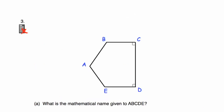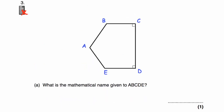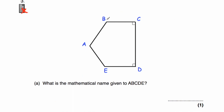Question number three: we've been given the shape ABCDE. Part A says, what is the mathematical name given to the shape ABCDE? It is a pentagon because it's got five straight sides — one, two, three, four, five. It's a pentagon.